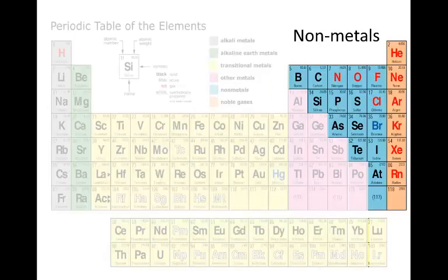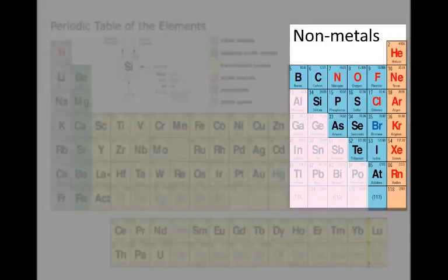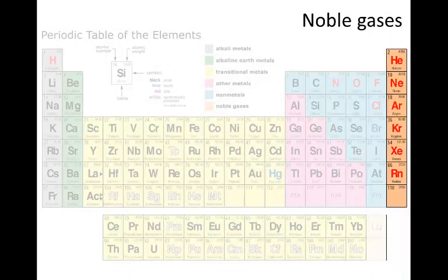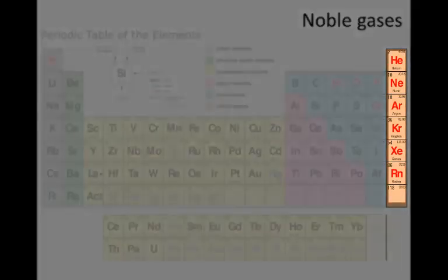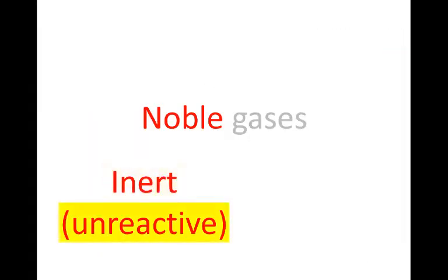Remember that on the periodic table, the non-metals are on the right-hand side of the periodic table. The last group of non-metals is called the noble gases. The noble gases are inert. They don't react at all.